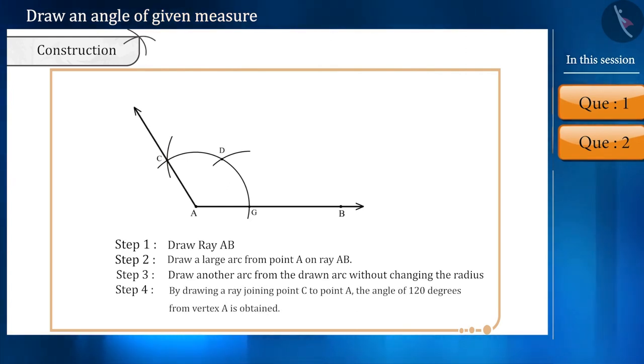Finally, drawing a ray joining vertex A to point C, an angle of 120 degrees can be obtained.